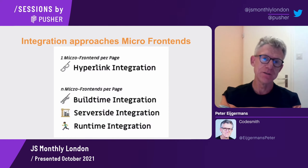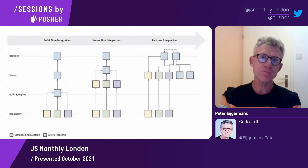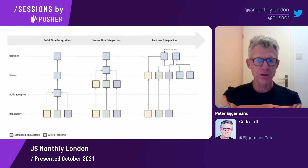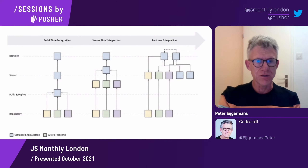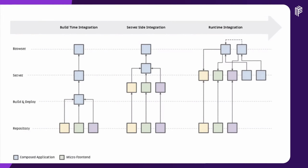Integration approaches of micro frontends — how do we bundle our micro frontends? When you have one micro frontend per page, you can use hyperlink integration. When you have multiple micro frontends per page, you can integrate them at build time, on the server side, or at runtime, bundling everything in the frontend.